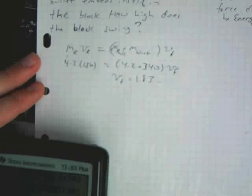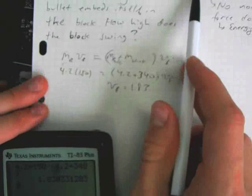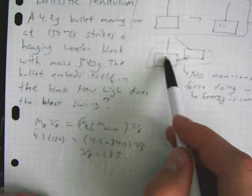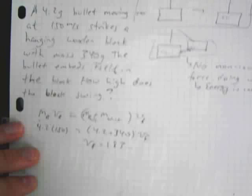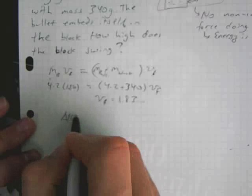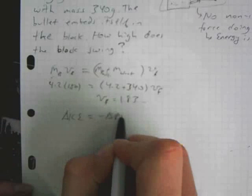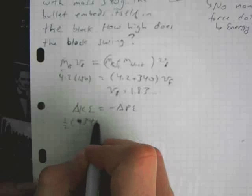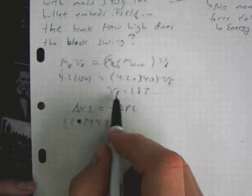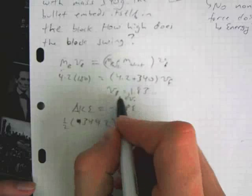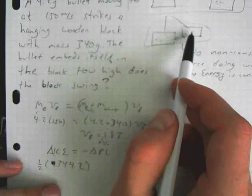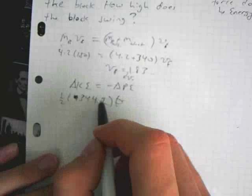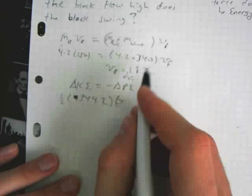Now, that becomes the initial velocity of the second part of the motion, where it just swings up. And over this part of the motion, energy is conserved. So, down here, we have some kinetic energy, and it turns into potential energy up here. We know that since there are no non-conservative forces acting, our delta KE is equal to minus delta PE. So, our one-half, our mass is the combined mass of the two. That's 344.2. V-final squared, this V-final becomes the V-naught down here. But when we swing up here, our velocity is going to be zero for an instant. So, our V-final there is zero.